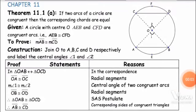Bismillah ar-Rahman ar-Rahim. Today we are going to start chapter number 11, theorem number 11.1, case A. The statement says: if two arcs of a circle are congruent, then the corresponding chords are equal. We take a circle with center O having two chords, AB and CD, and two arcs, CFD and AEB. If the two arcs are equal, then their corresponding chords CD and AB must also be equal.